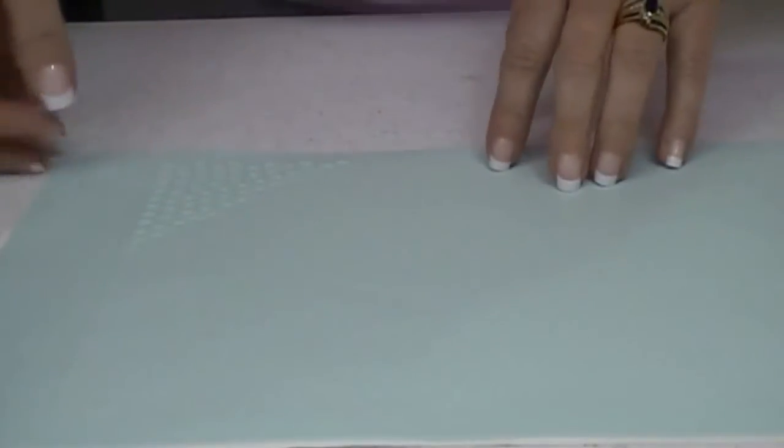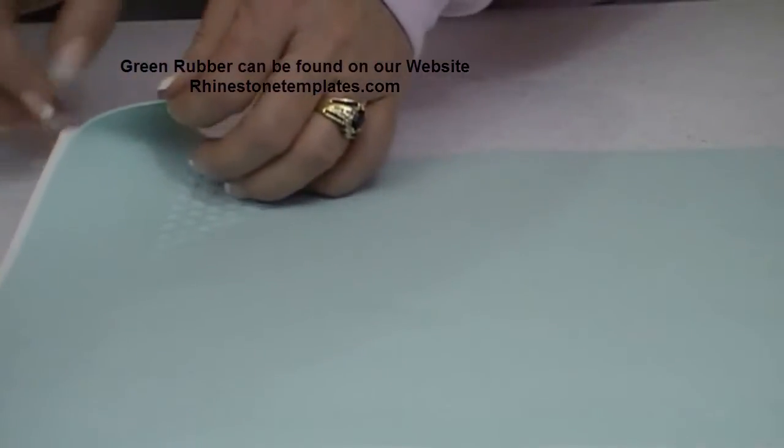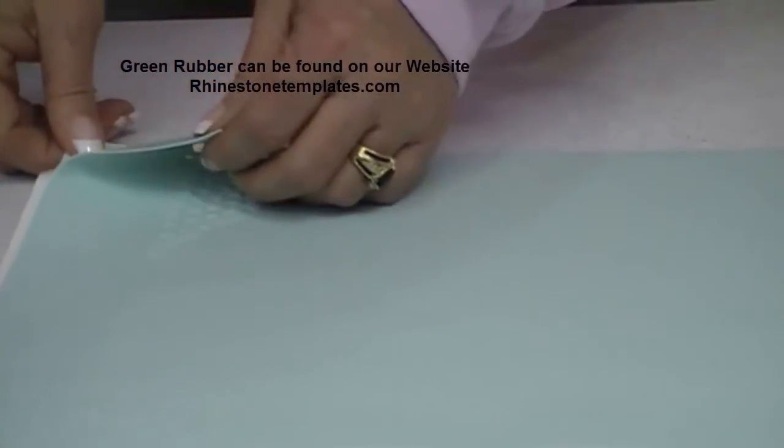Hi, this is Sandy Jo from RhinestoneTemplates.com. I have just cut out this design as a custom design for one of my clients and I used the green rubber material that's on our website. I just wanted to show you how easy it is to weed this material when you cut it with the right force and the right rotations.